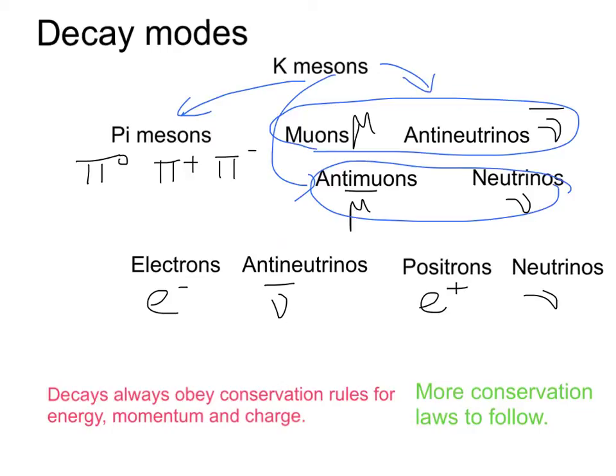The charged pions or pi-mesons decay into muons and anti-neutrinos, or anti-muons and neutrinos. And the neutral pion decays into high-energy photons.